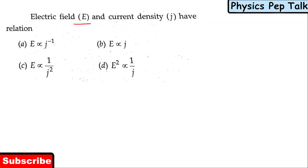The next question: electric field E and current density j — what is their relation? We have derived the expression that current density j is equal to σ times E.